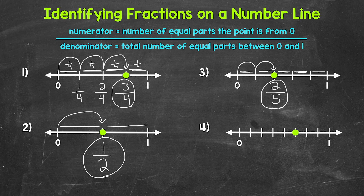Let's label the rest of this number line as well. We start with zero — zero fifths. Then we have one fifth, two fifths, three fifths, four fifths, and then five fifths is one whole.